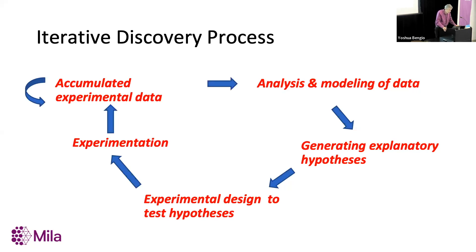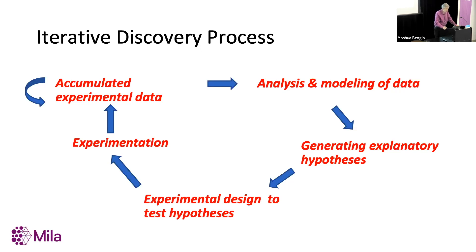For any given dataset there could be multiple theories that explain it, and that's why I'm going to try to convince you that you have to be Bayesian — so that you can entertain all these theories. Once you have that, you want to decide what the next batch of experiments is going to be. We say batch because we can do many experiments in parallel. You want to design the experiment so you can reduce uncertainty — to do an experiment that brings as much information, expressed as mutual information, about the distribution you have over hypotheses that explain the data.